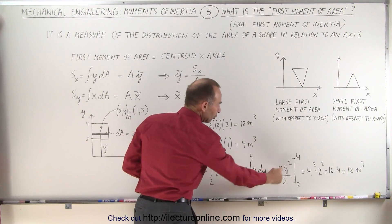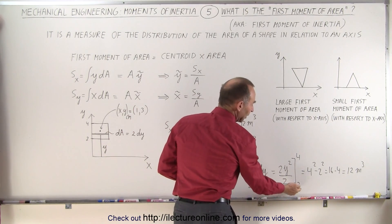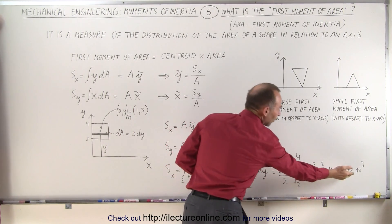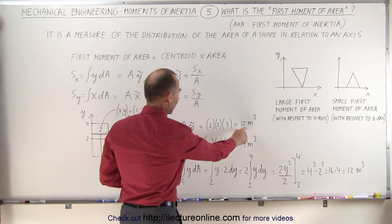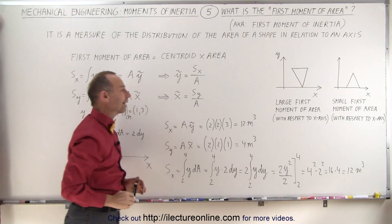Notice the 2s will then cancel. Then we evaluate from the limits of 2 to 4, and we end up with, of course, the exact same result: 12 meters cubed that we got when we calculated it directly.